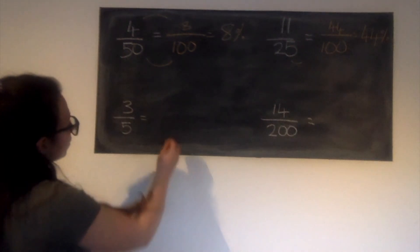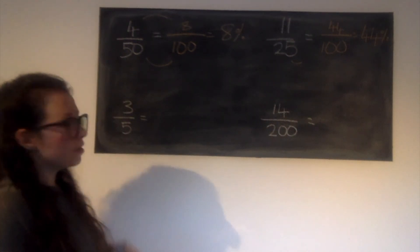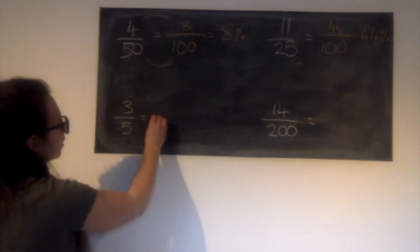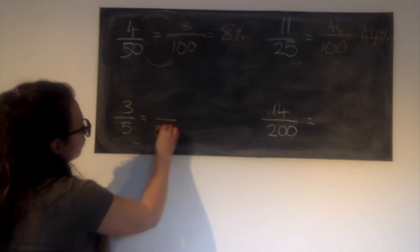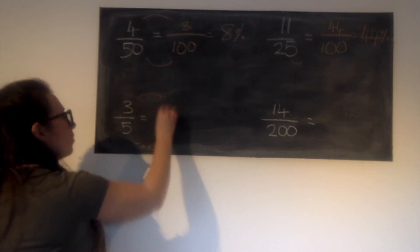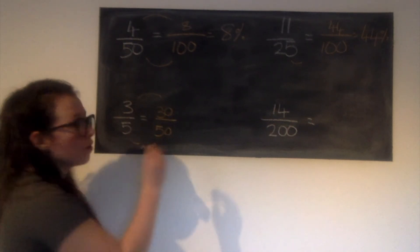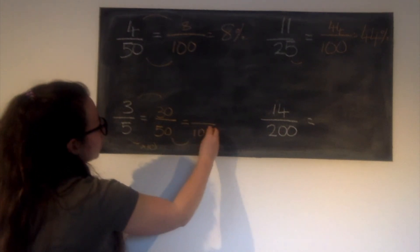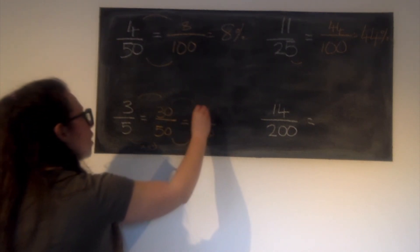So this time I've got 3 fifths. I can do this in two stages. I can turn this into fiftieths because that's nice and easy. So let's do that. So I'll turn it into fiftieths. So I've timesed it by 10. Do the same to the numerator. But I'm not finished because I need to be over 100. So this time I'm multiplied by 2. Do the same to the top. It gives you 60.